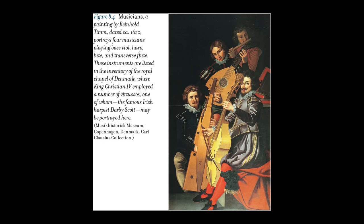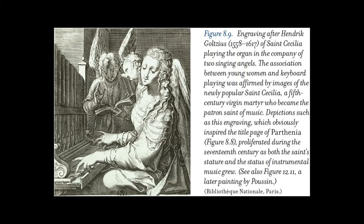After 1450, churches, patrons, and musical amateurs increasingly cultivated instrumental music. It was written down more often, reflecting an increase in status and musical literacy for instrumentalists. There were new instruments, new roles for instrumental music, new styles, and new genres. Instrumental music in the Renaissance had been viewed in five main categories: number one, dance music; number two, arrangements of vocal pieces; number three, settings of existing melodies; number four, variations; and number five, abstract works.